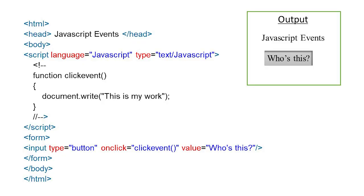In the elaborated example, the head shows 'JavaScript Events', the body contains the script with language JavaScript, type text/javascript, and the clickEvent function using document.write to output 'This is my work'. The form has an input type button with onclick equals clickEvent and value 'Who is this'. Then the form, body, and HTML tags are closed.